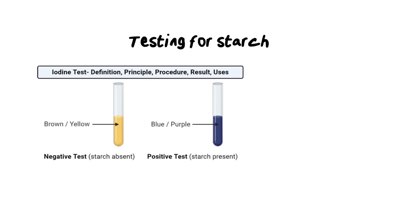We need to be able to test for the presence of starch, and it's actually a very simple test. The indicator we use is iodine, which will go from a brown-yellow color to a dark blue-purple color in the presence of starch. So if you drop a little bit of iodine on a potato or bread and starch is present, it will turn a blue-black color. If there is no starch present — for example, on meat or fruit — it won't change color and will remain brown-yellow.